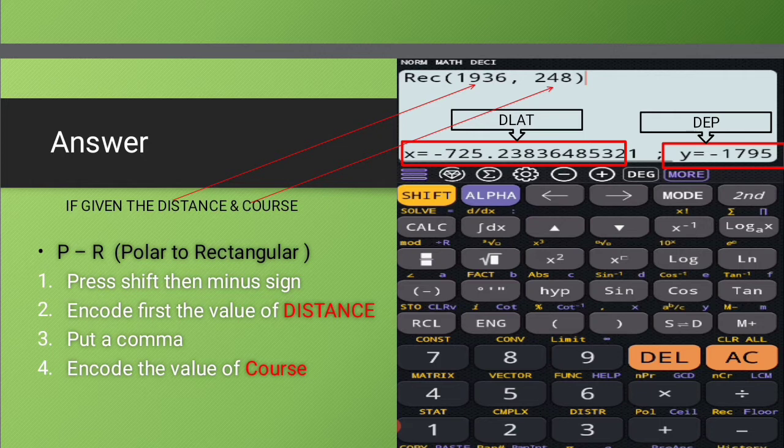So in this scientific calculator, I need to press the button shift and after that, open parenthesis. Now after putting a comma,